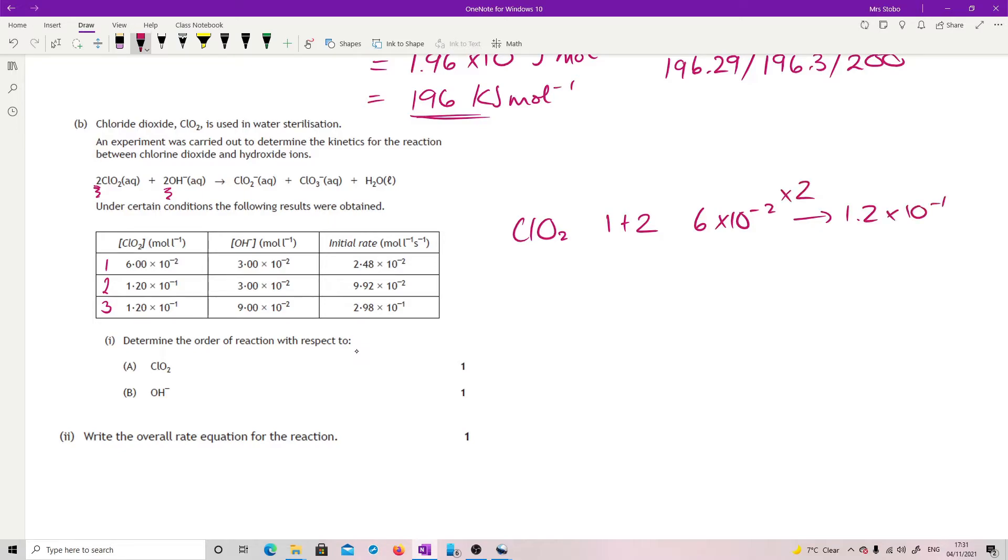So then what I do is look at the rate. The rate over here, 2.48 times 10 to the minus 2, has gone to 9.92 times 10 to the minus 2. That has not doubled. If I do the check in the calculation, this is multiplied by 4. So this is second order.